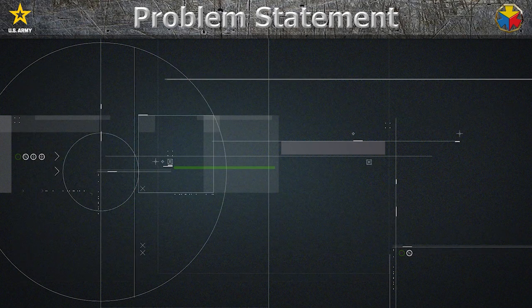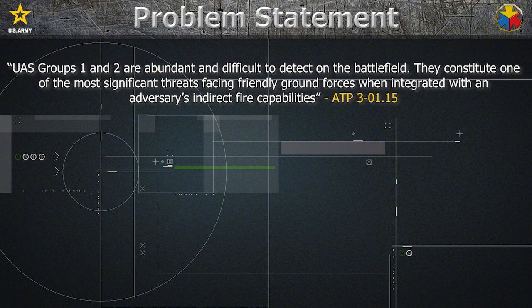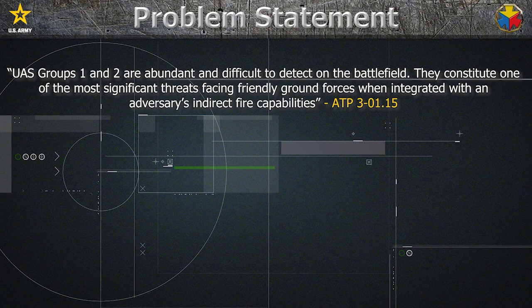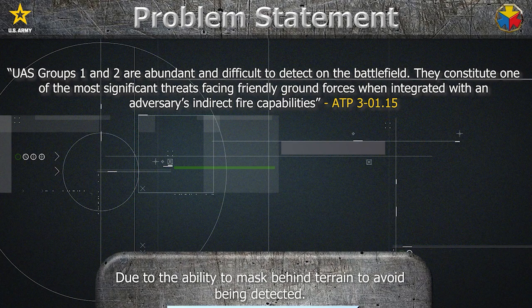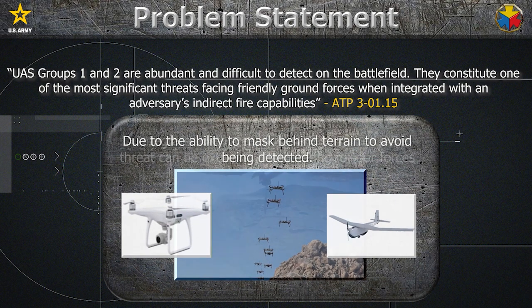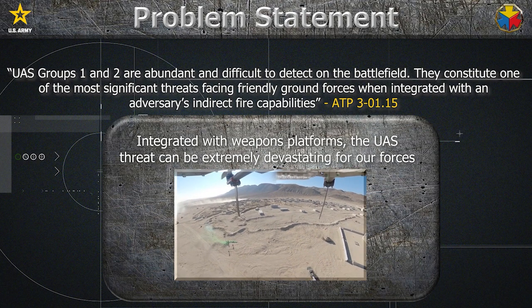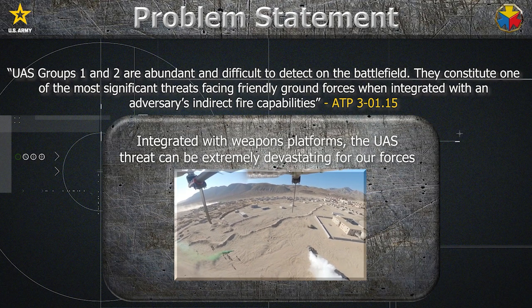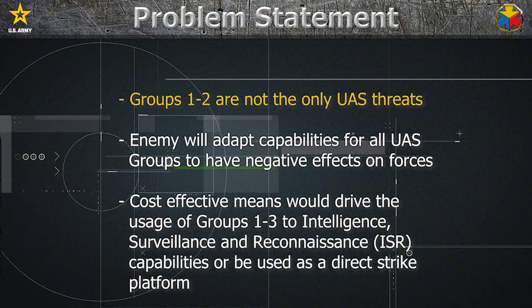The small quote, highlighted in blue, comes out of ATP 3-01.15, describing specifically the problem enemy UAS Groups 1 and 2 create for friendly units due to their ability to mask behind terrain and to avoid being detected. Integrated with weapon platforms, the UAS threat can be extremely devastating for our forces. Groups 1 and 2 are not the only UAS threats we need to worry about — the enemy will adapt capabilities for all UAS groups to have negative effects on our forces.